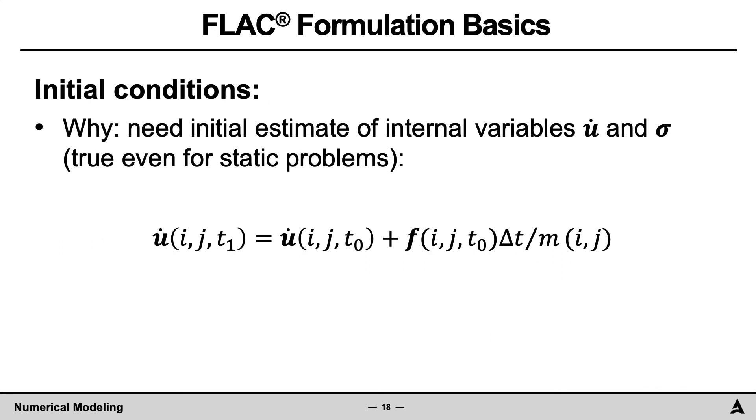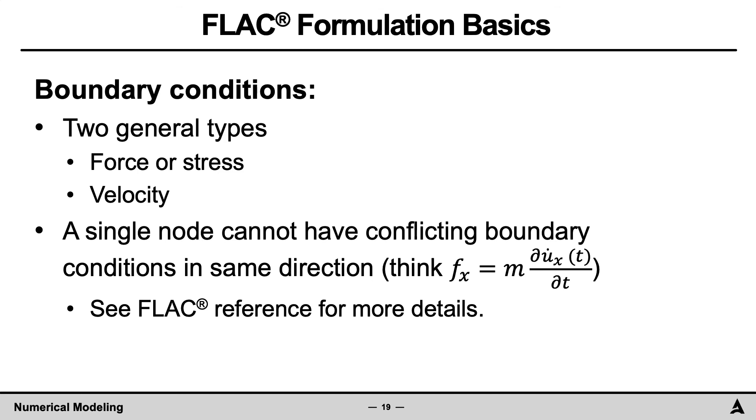Two other general items to mention are the initial conditions and boundary conditions. For static problems, initial conditions are helpful. Why? Because in a time-marching scheme, a calculation from one step is dependent on that from the previous step. Mathematically, this is shown by recalling the finite difference approximation for F equals MA. Thus, the initial condition or initial values can affect the accuracy of the solution. Boundary conditions are also required and are of two general types, force or stress, and velocity. Note that a single node cannot have conflicting boundary conditions, for example, force and velocity, in the same direction. A rigid node is set by initializing and then fixing the velocity to zero.